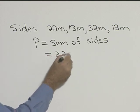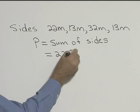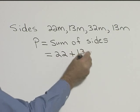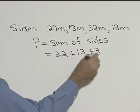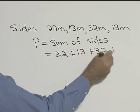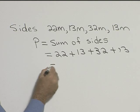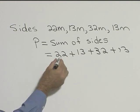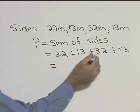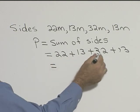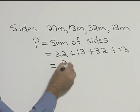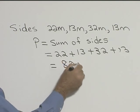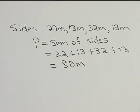So we'll take 22 plus 13 plus 32 plus 13. Adding those up, 35 plus 45 gives us 80 meters. So the perimeter of our trapezoid is 80 meters.